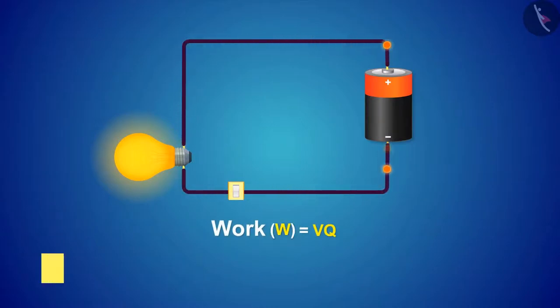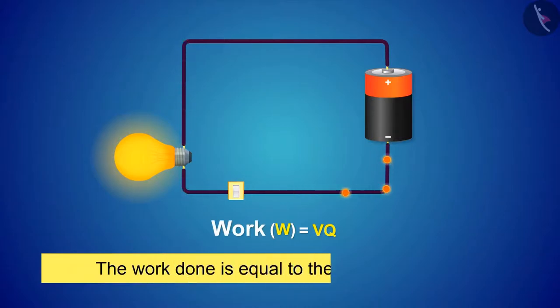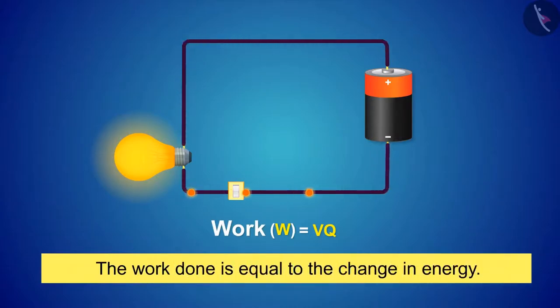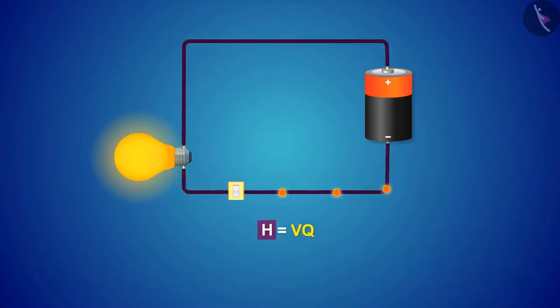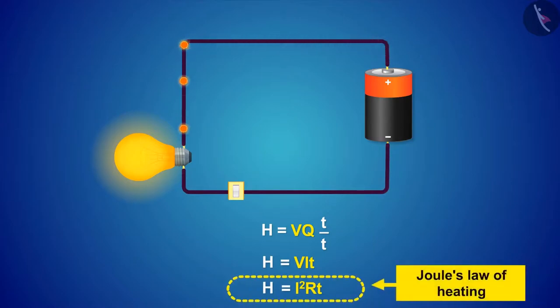In physics we have also read that the work done is equal to the change in energy. Then we can say that the energy from electricity will be equal to this work, which is denoted by H. If we multiply and divide the RHS of the equation by T, we'll get this equation. And after applying the formula of voltage from Ohm's law, such an equation will be obtained. This equation is known as Joule's law of heating.